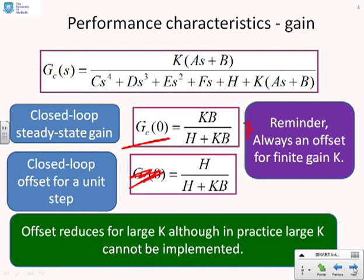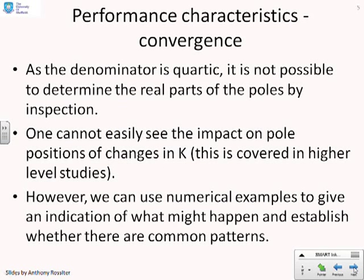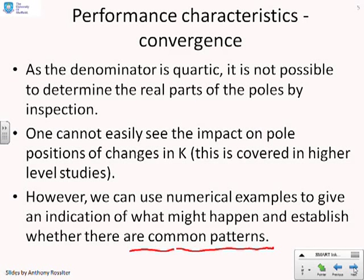Offset reduces for large K, but in practice large K cannot be implemented. So if you have a high order system and simply proportional gain, you're likely to end up with an offset. Regarding convergence: because the denominator is quartic, it's not possible to determine the real parts of the poles by inspection. We cannot easily see the impact on pole positions of changes in K — you need something like the root loci tool. However, we can give some numerical examples to establish whether there are common patterns.